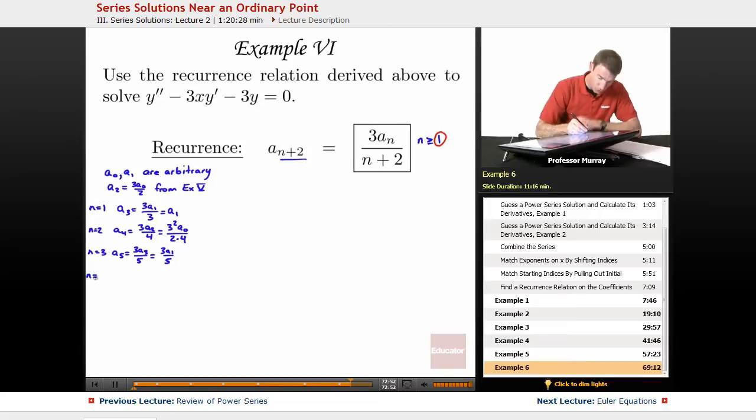N equals 4 is going to give me A6 is 3A4 over 6, which is 3 cubed A0 over 2 times 4 times 6.